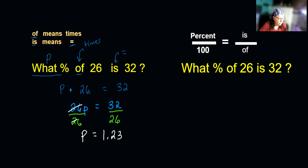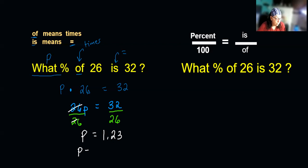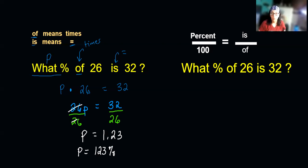On the left side, 26 divided by 26 is just one, so I'm left with P. And 32 divided by 26 is about 1.23 — that's the decimal. I need to move the decimal two places to change it from a decimal to a percent, so the percent is actually 123%. Think about it: what percent of 26 is 32? Well, 32 is bigger than 26, so it's more than 100%. Be smart — have an idea of what the answer should be before you even do the problem.